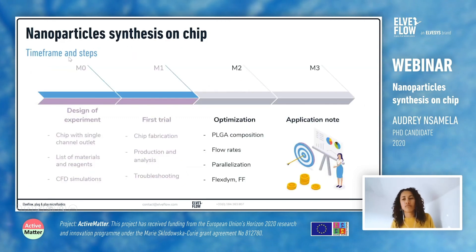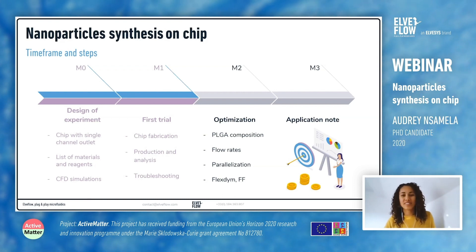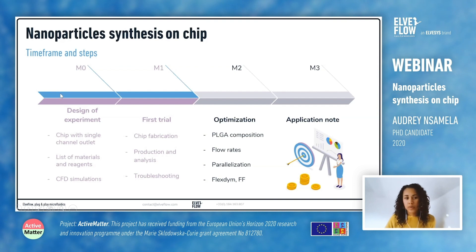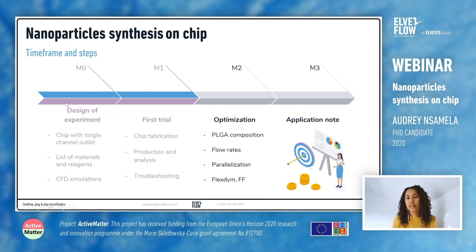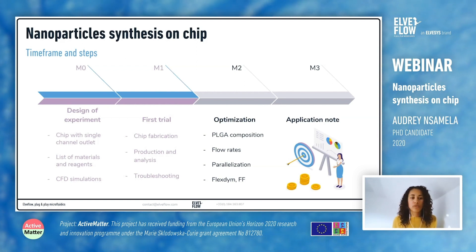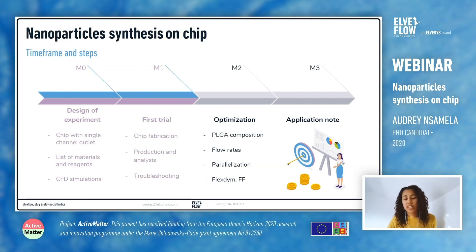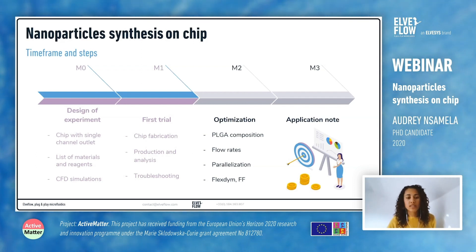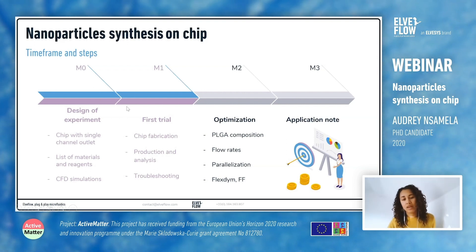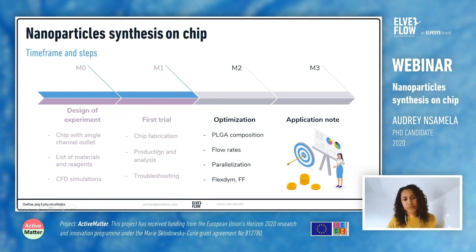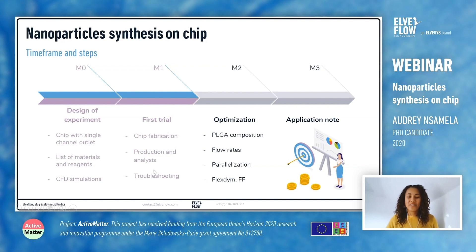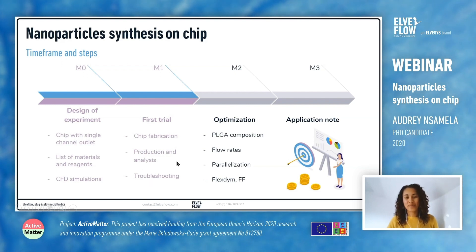To give you a general, approximate timeline — because due to the containment it's probably not going to be three months — of what I intend to do in order to write a small application note on nanoparticle synthesis on chip: I'm currently at the design of experiment stage. I will use a design similar to the one I previously showed you — a chip with a single channel outlet — make the list of materials and reagents needed for PLGA nanoparticles, and do some CFD simulations to see the effect of flow rates. All of this I can do at home. When I'm able to go back to the lab, I'll fabricate the chip and start making the nanoparticles, then analyze them. If it doesn't work, I will have some troubleshooting to do — though I expect to have to do some anyway.